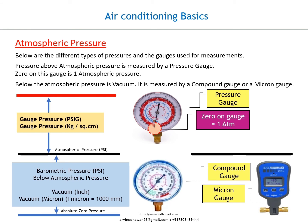Below are the different types of pressures and the gauges used for measurement. Pressure above atmospheric pressure is measured by a pressure gauge — 0 on this gauge is 1 atmospheric pressure. Below atmospheric pressure is vacuum; it is measured by a compound gauge or a micron gauge.